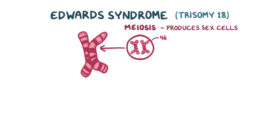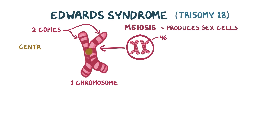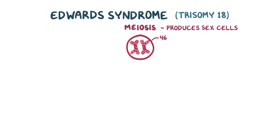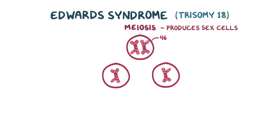Even though there are two copies of DNA here, we'll still say it's one chromosome, since they're hooked together in the middle by this thing called a centromere. Then the cell splits in two, and pulls apart the paired chromosomes, so in each of these cells, you've now got 23 chromosomes.